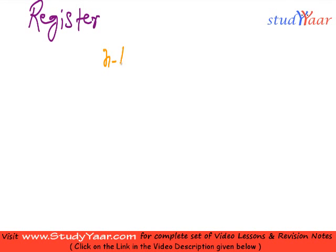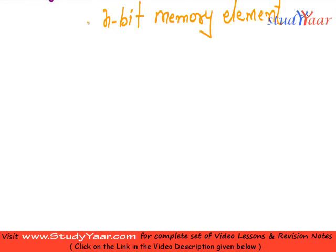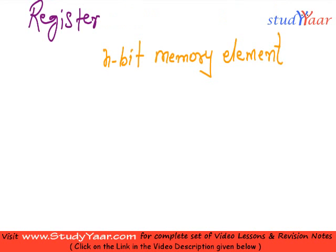Now we are going to talk about registers. What is a register? A register is an n-bit memory element. A register allows you to store n-bits of information. Now depending upon how you read these n-bits of data and how you write this n-bit of data, you can have four types of registers.